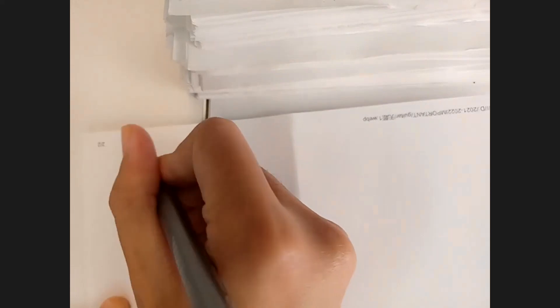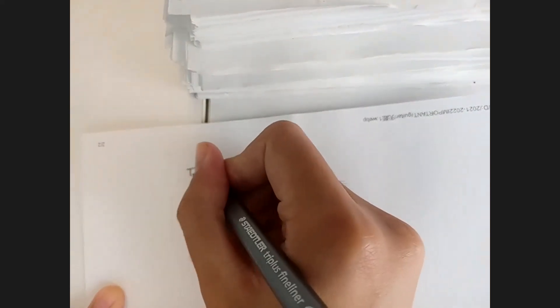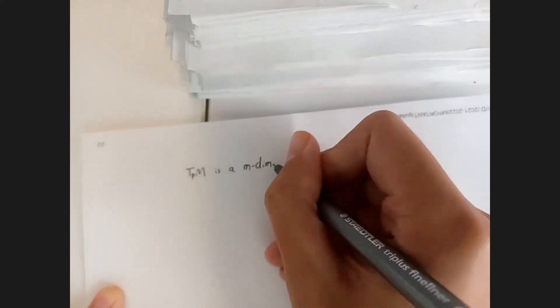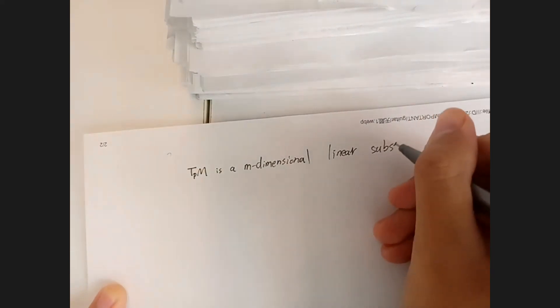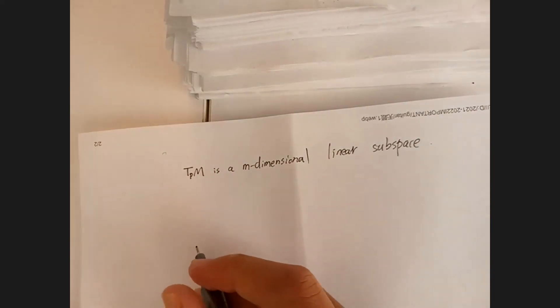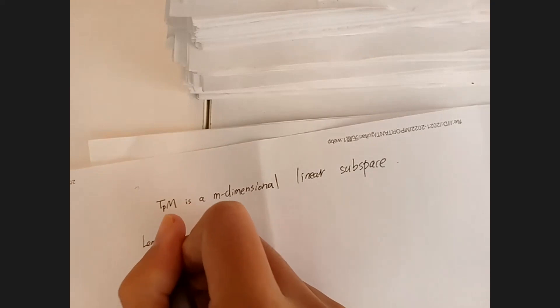We want to prove that T_p M is an m-dimensional linear subspace. To prove that, we're going to use a lemma.